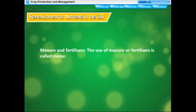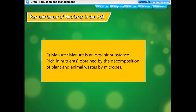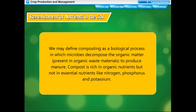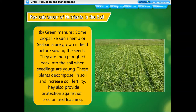The use of manure or fertilizers is called manuring. Manure is an organic substance rich in nutrients obtained by decomposition of plant and animal wastes by microbes. Compost is prepared by decomposition of farm and domestic organic waste materials like animal excreta, human fecal matter, sewage wastes, weeds, and dry leaves in a compost pit. Composting is a biological process in which microbes decompose organic matter to produce manure. Compost is rich in organic nutrients. Some crops like sun hemp or sesbania are grown in fields before sowing, then plowed back into the soil when young — these decompose and increase soil fertility and protect against soil erosion.